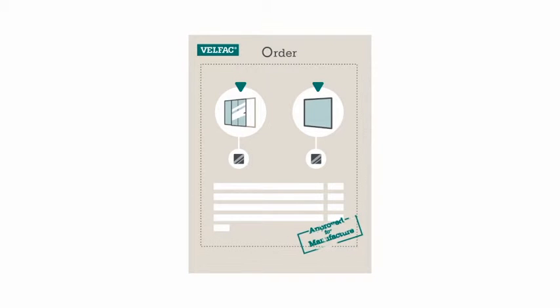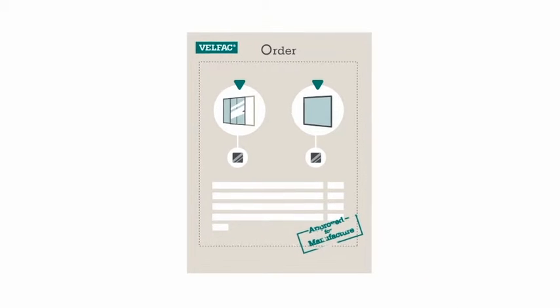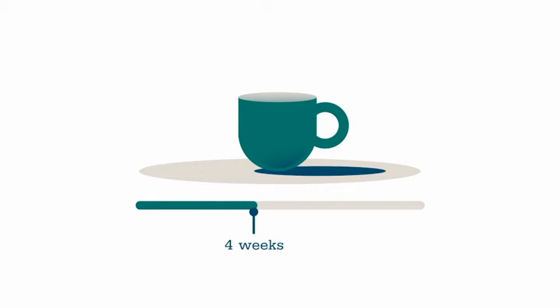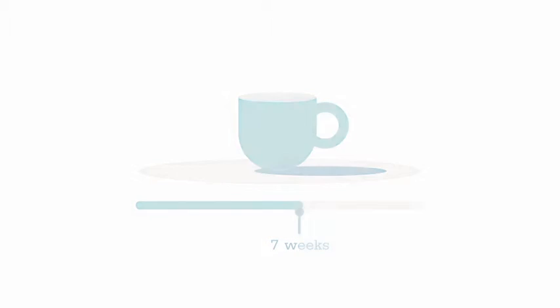Your project coordinator will check the details before sending to manufacture. Velfac will now manufacture your new windows. They'll arrive in 6-9 weeks with a 12-year warranty.